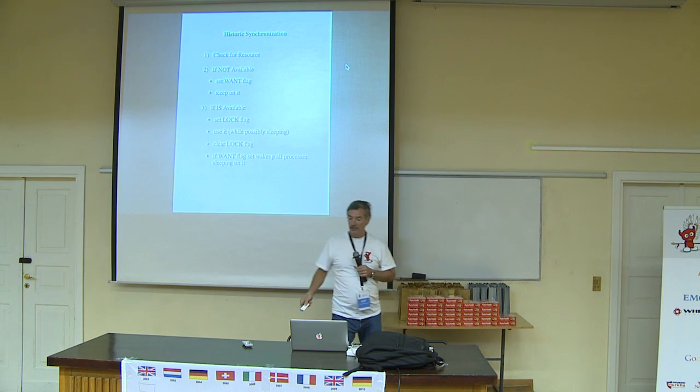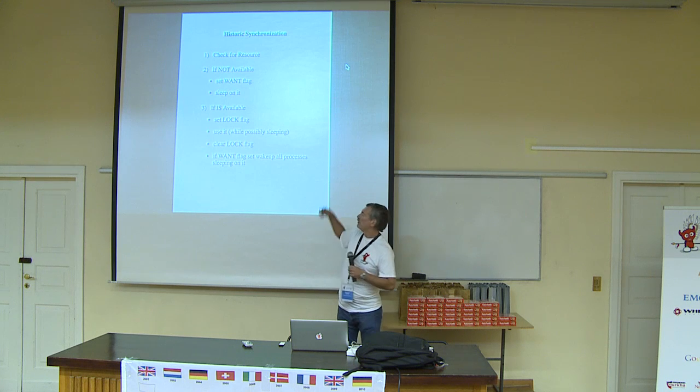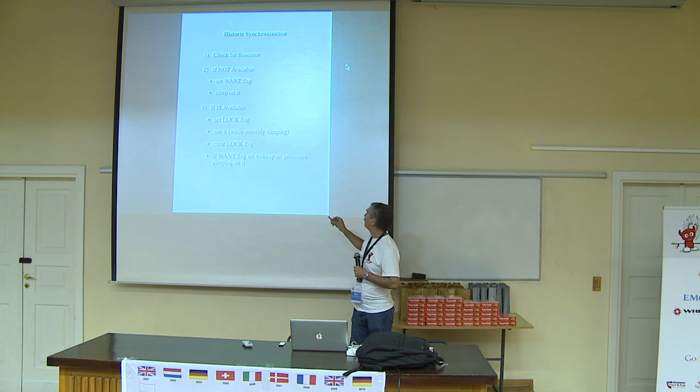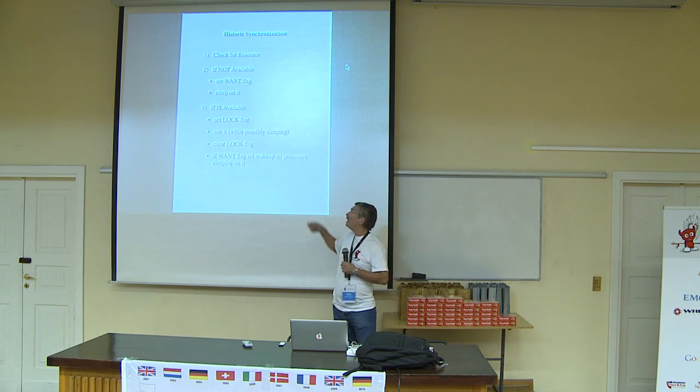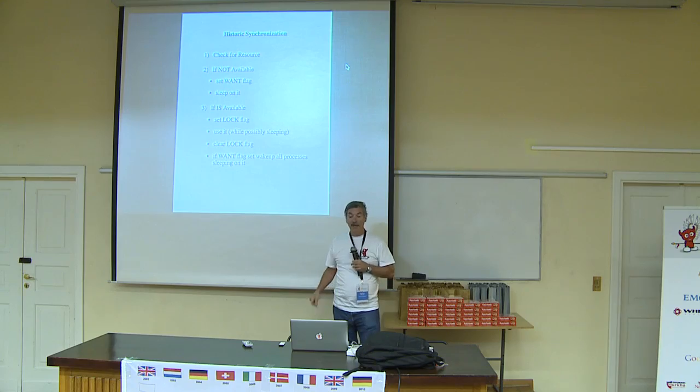Historic synchronization, as shown in this slide, would start by checking for a resource. To make this concrete, let's say we need the page representing the password file. We go find that page in memory, then check whether it's available. There are just a couple of flags defined: a lock flag — if set, it's in use; if cleared, it's available. If we find the lock flag is set, we know someone else is using it, so we can't have it right now. There's another flag — the want flag — and we set the want flag and then go to sleep on it.